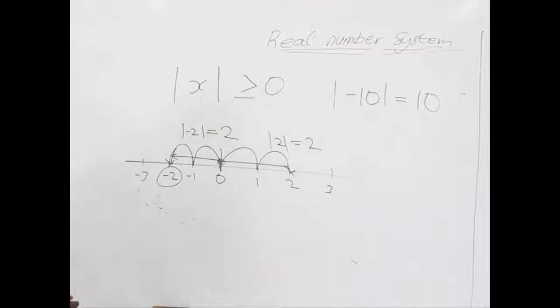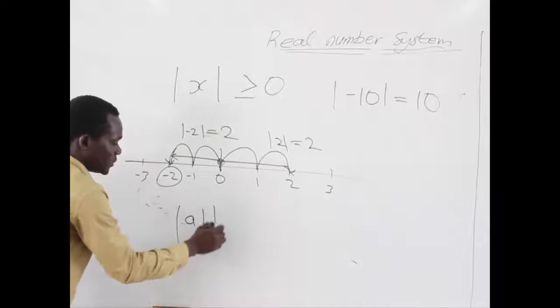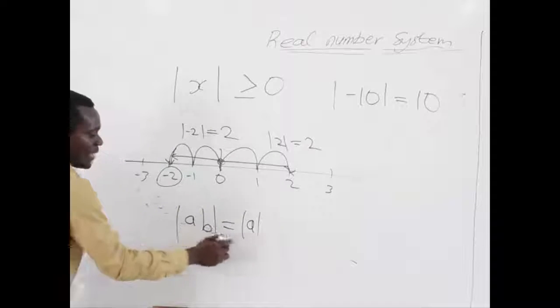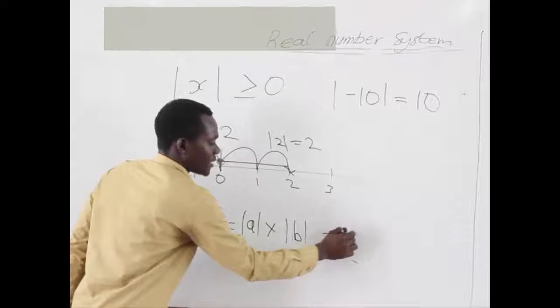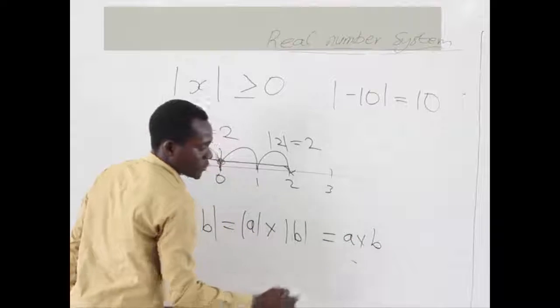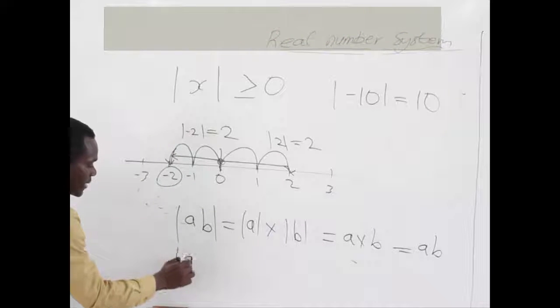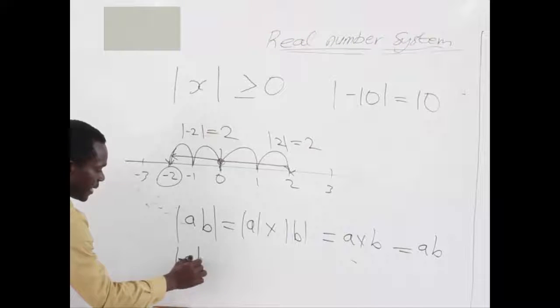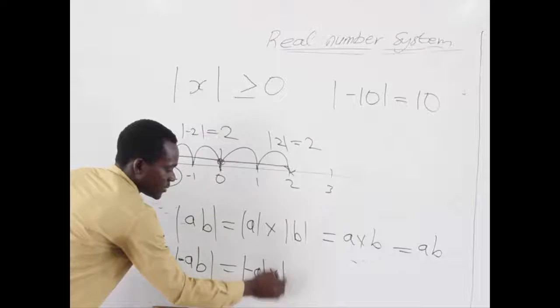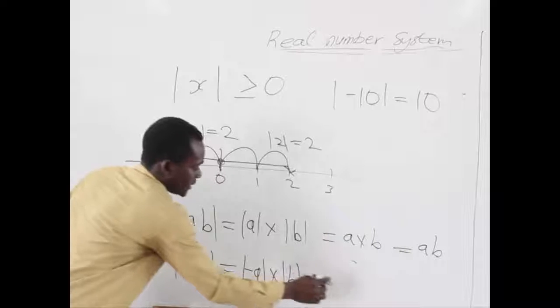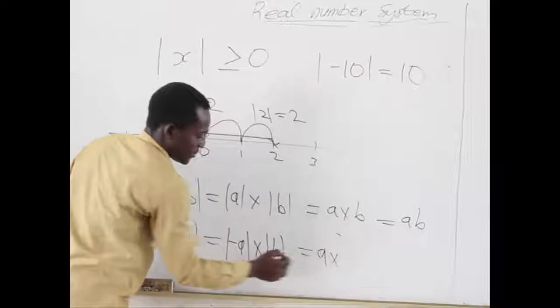Now, some few properties of absolute numbers. When we have absolute A times B, it can be written as absolute of A times the absolute of B. And we give this as A times B, which is the same as AB. But we have absolute negative AB. And we said absolute of any negative number is still positive, so I'm going to get A times B,